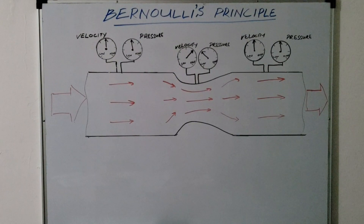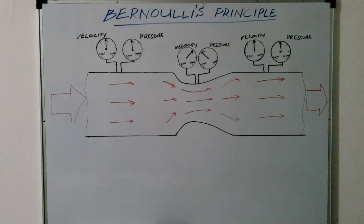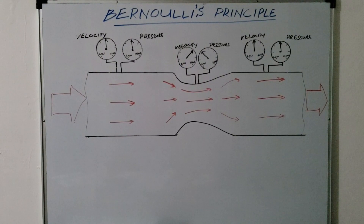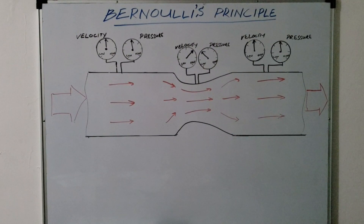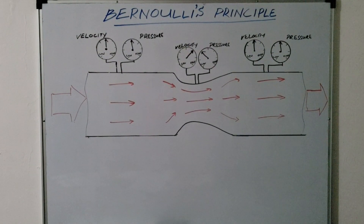One way you can visualize this principle is to imagine air flowing through a tube that is narrower in the middle than at the ends. This type of device is usually called a venturi. It is not necessary for air to pass through an enclosed tube for Bernoulli's principle to apply — any surface that alters airflow causes a venturi effect.